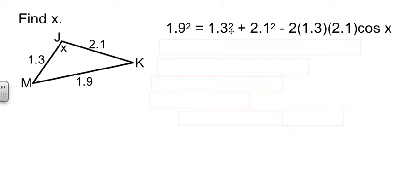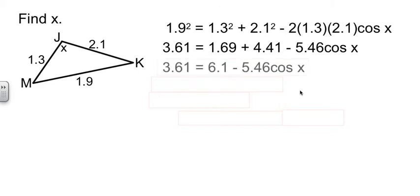So 1.9 squared equals the other two squared minus 2 times the two sides times cosine of the angle. Do a little arithmetic. Do a little more arithmetic, collecting up terms and such. Now here's where people make a mistake.